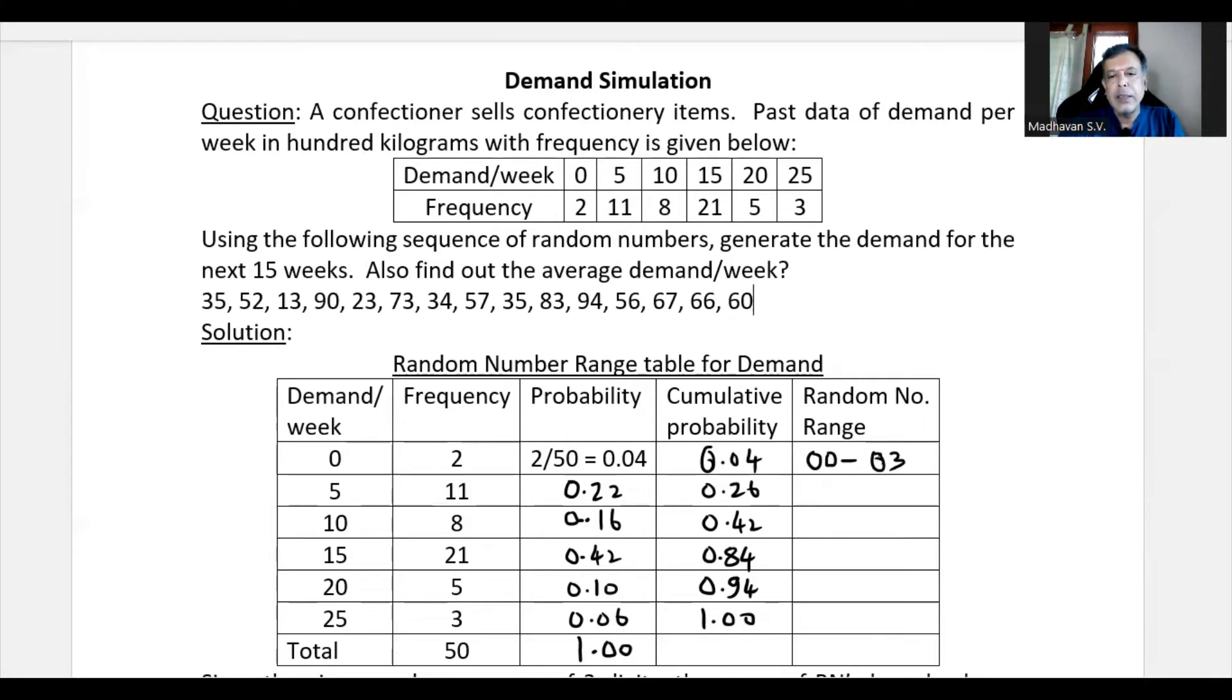Then since it is ended with 0.3, we will start with 0.4 and since here it is 0.26 will go up to 2.5 means if we count the number of random numbers in this range, we will get 22 random numbers. Same way, we'll start with 26 end with 41. Again, if we count the number of random numbers, we'll get 16 random numbers.